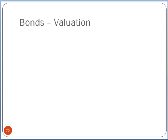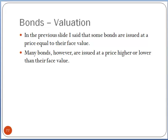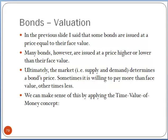Now let's talk more specifically about valuation for bonds, and you'll see how this relates to the time value of money we developed in our earlier lecture. In the previous slide I said some bonds are issued at a price equal to their face value, but many bonds are issued at a price either higher or lower than face value. Ultimately, the market — supply and demand — determines a bond's price. Sometimes bond holders are willing to pay more than face value, and other times they're willing to pay less. We can make sense of this by using the time value of money technique.